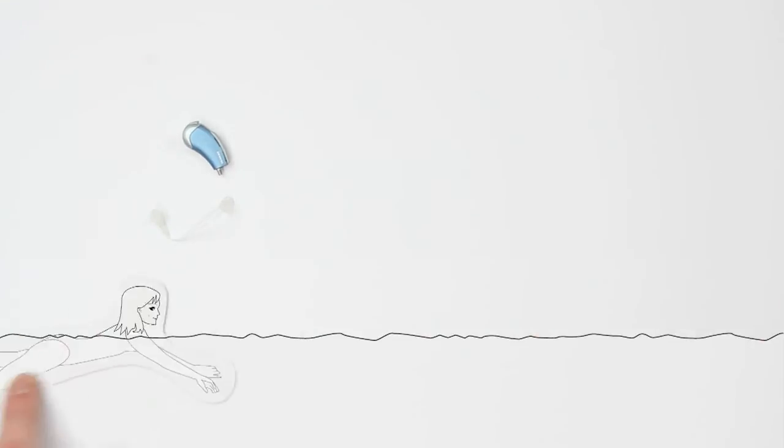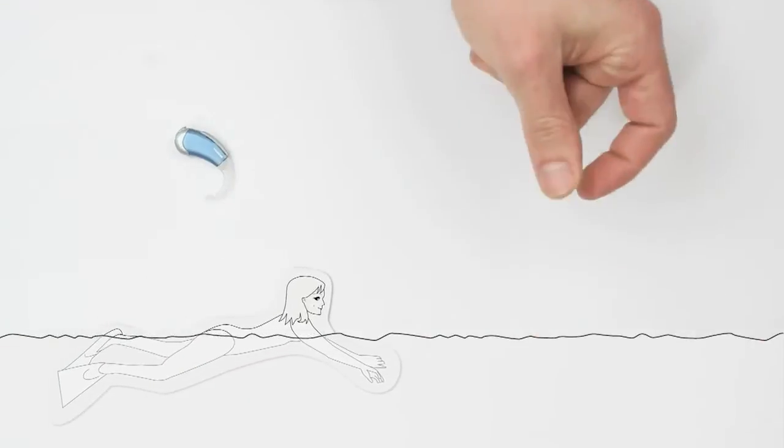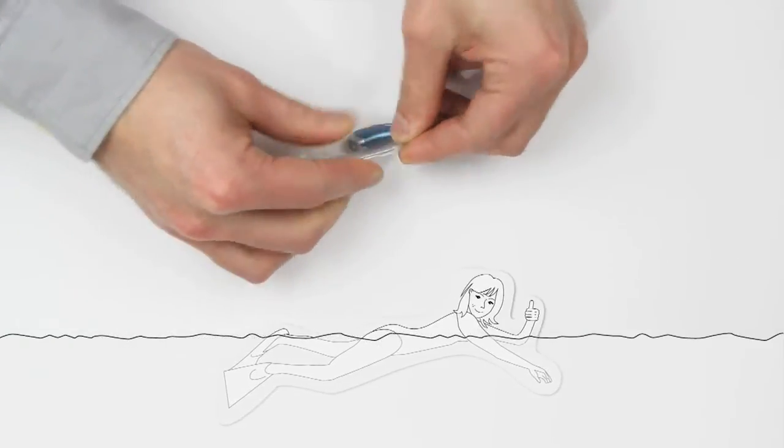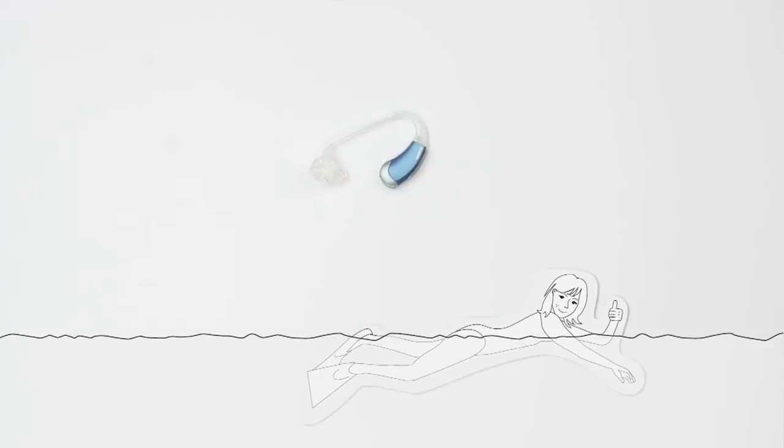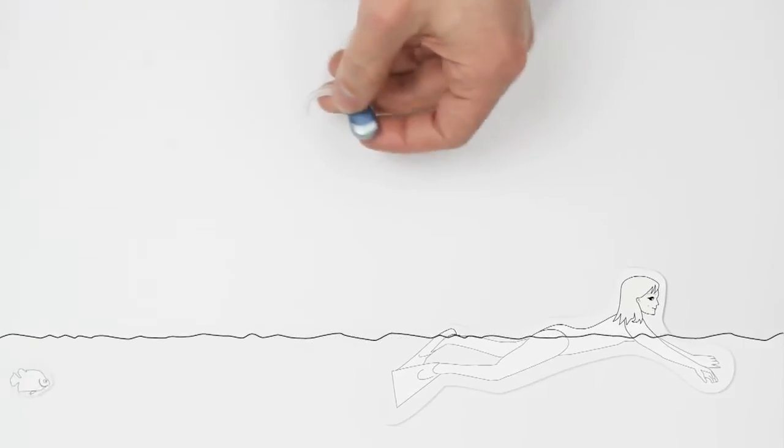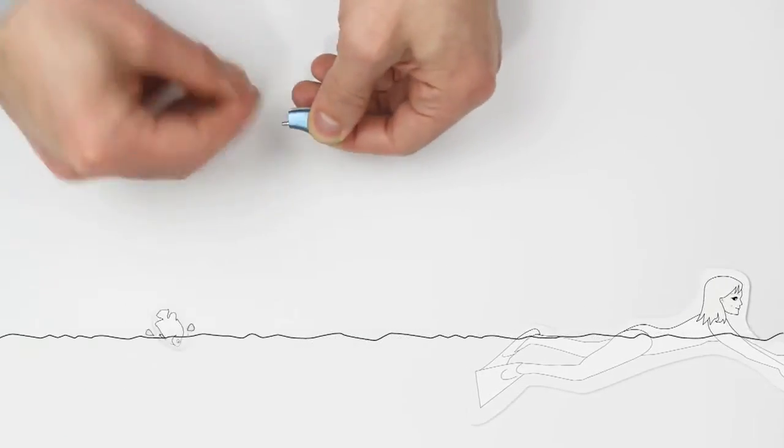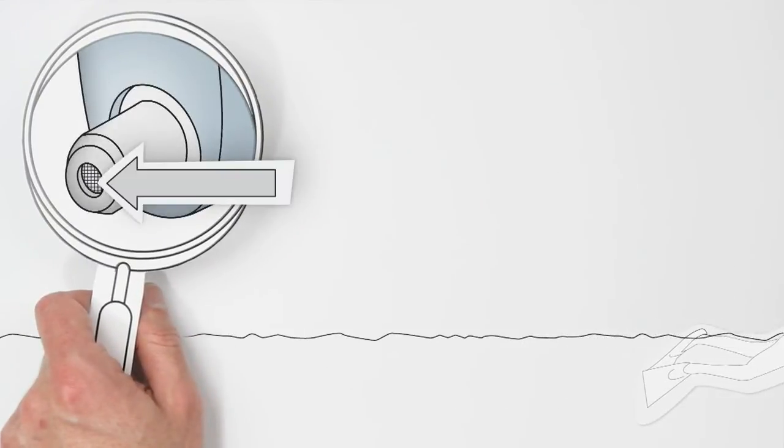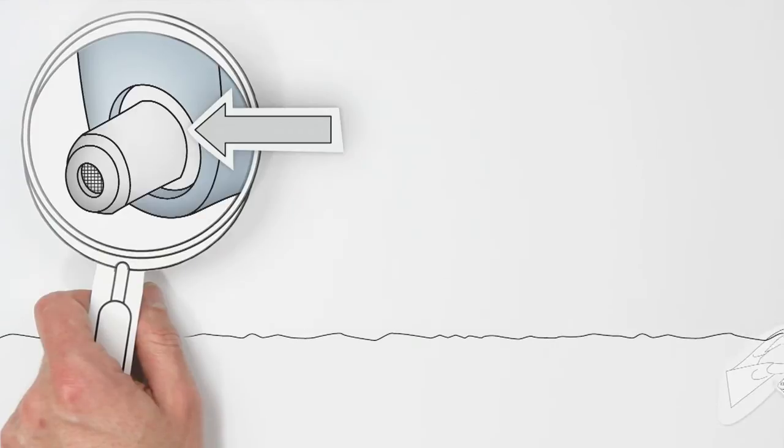Another important part of the hearing aid that needs to be protected from water is the receiver. But even going for a swim is possible for Mary because the ear hook together with an individual ear mold for swimming keeps Aquarius absolutely waterproof. A nano-coated grill inside the screw cap helps to protect the receiver. An extra gasket seals the connection between the housing and the electronics, ensuring that absolutely no water can sneak inside.